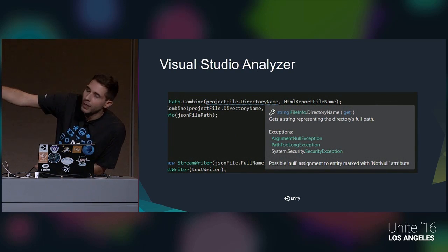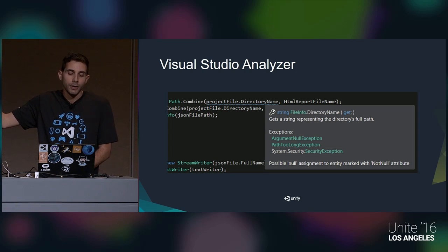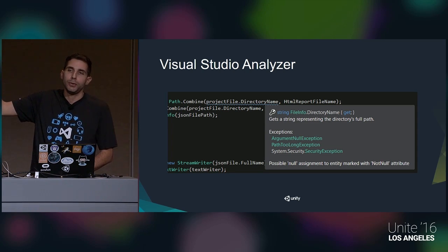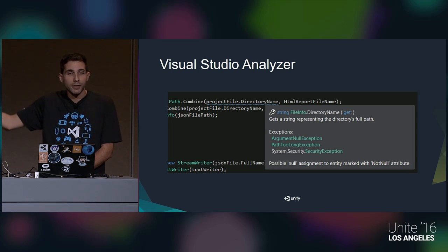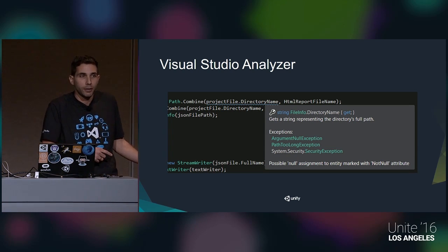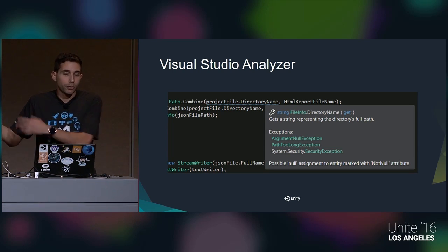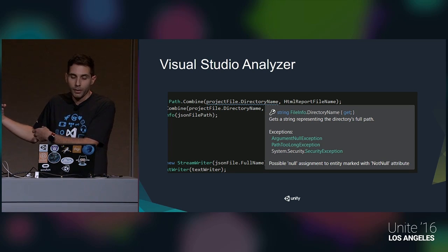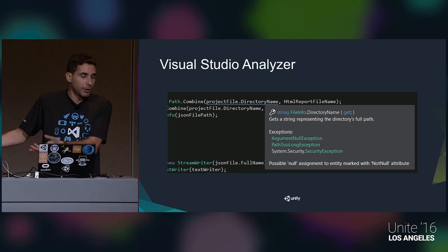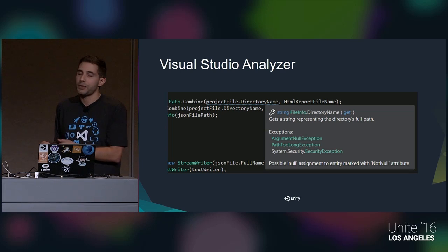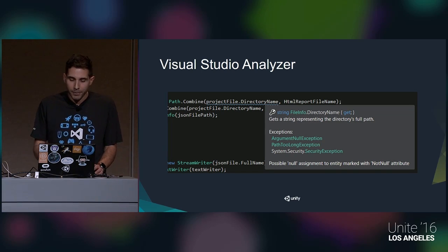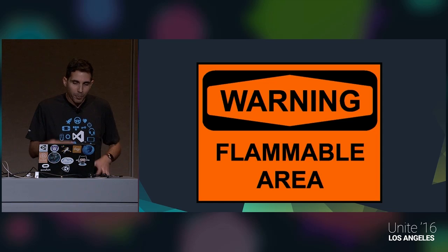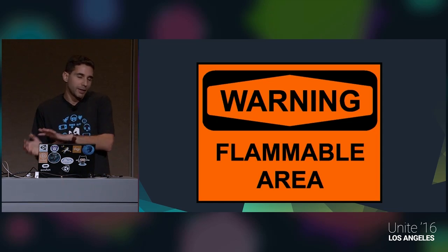Neither Visual Studio nor ReSharper are specific to Unity, and that's the nugget we want to get at. A quick example for those not familiar with VS 2015: it can let you know that a property you're about to use could potentially be null, and if it is null you're going to throw an exception. If you didn't write that particular object you may not know it might be null, so the fact that it's warning you is really helpful - it's a tool in a tool belt.